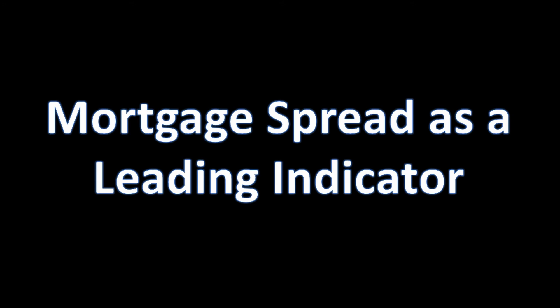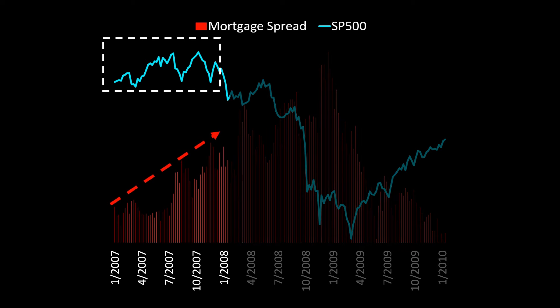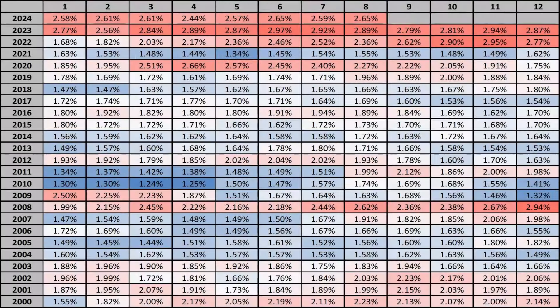Mortgage spreads can act as a leading indicator and really forecast which way the market is going. Here's how: this chart shows 2008 in blue — the S&P 500 — and the red histogram bars show the mortgage spread, the difference between the average 30-year mortgage and the 10-year U.S. Treasury. The higher the bar, the more the risk. Notice the phenomenon — in early 2007, the S&P 500 was chugging along with no sign of a bear market, but mortgage spreads were rising almost every single month, showing an increase in risk before the stock market even realized it.